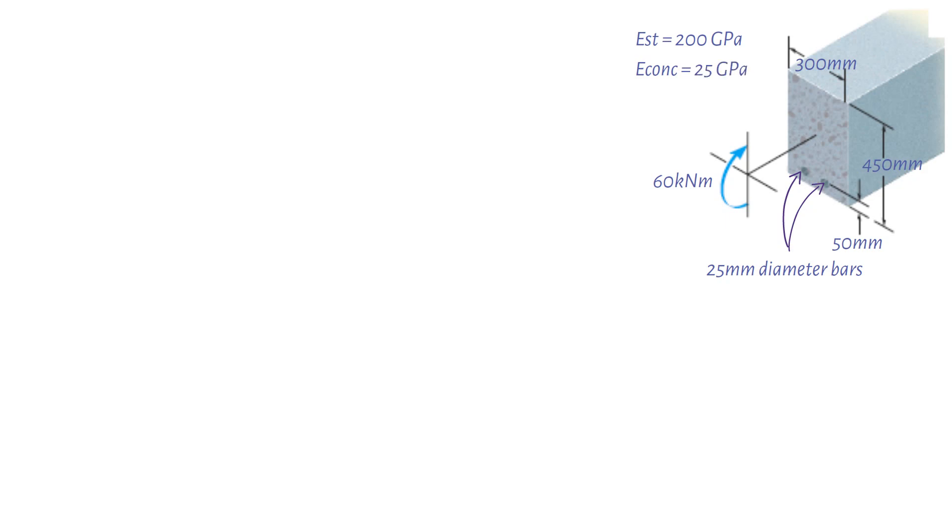First, we will work out the total area of steel, which equals 2 times pi times the bar diameter 25 mm divided by 1000 squared, divided by 4. This gives us a value of 0.3125 pi times 10 to the power of minus 3 square meters.